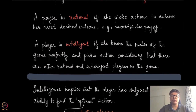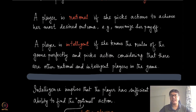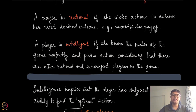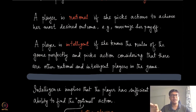The second part is called intelligence. We call a player intelligent if she knows the rules of the game perfectly and picks actions considering that there are other rational and intelligent players in the game. This definition is a little circular in nature, but it is purposefully done that way — it means the player does not only consider its own payoff-maximizing actions.